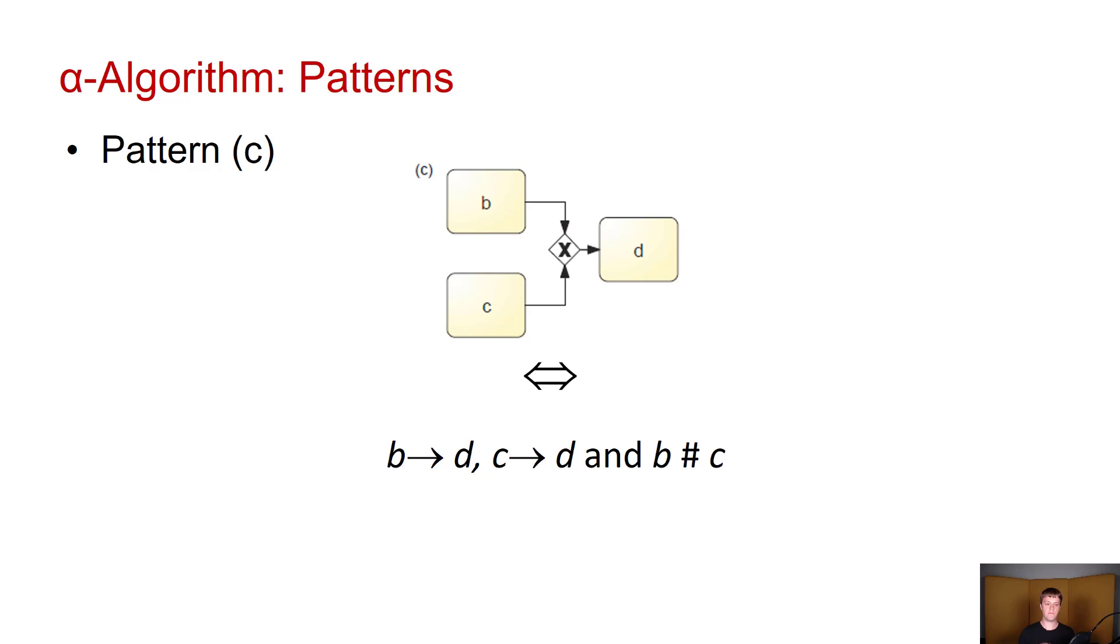Conversely, if we have B is followed by D, C is followed by D, and B and C do not occur in parallel, then we use an XOR join.